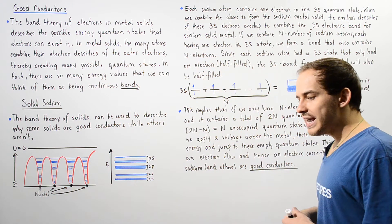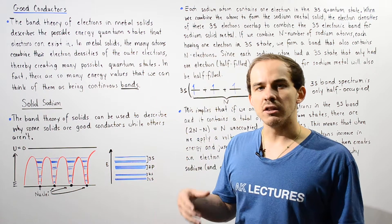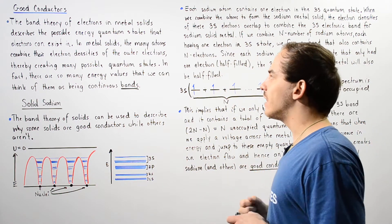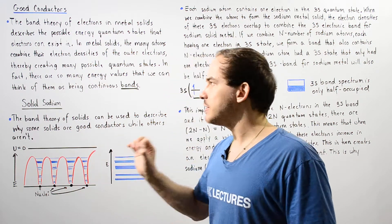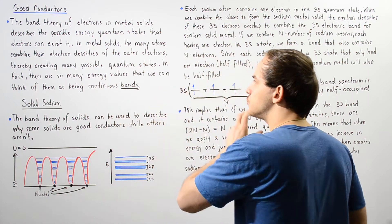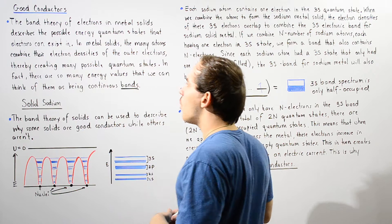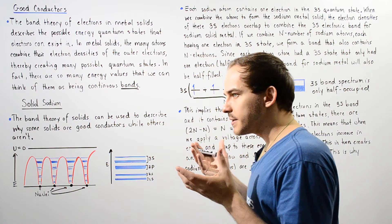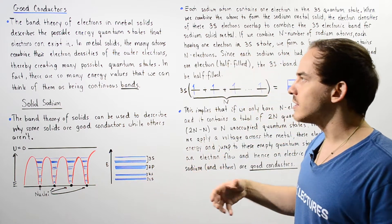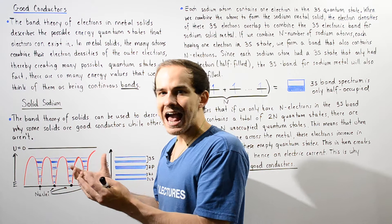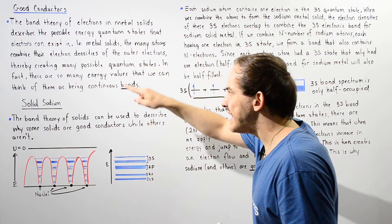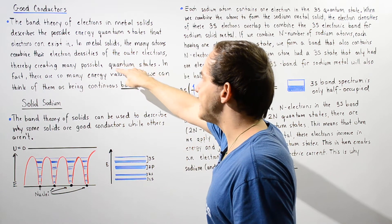In metal solids we have individual metal atoms that combine the electron probability distributions of the outer electrons to form many possible energy values of quantum states. In fact, there are so many energy values that we can think of this energy as forming a continuous band of energy quantum states — and that's exactly why we call it a band theory. Because we have so many atoms combining inside our solid, we have a continuous band of energy values representing each particular quantum state.